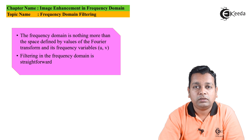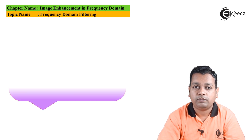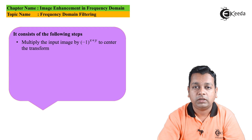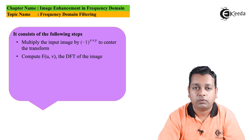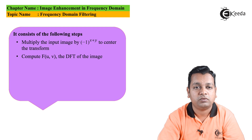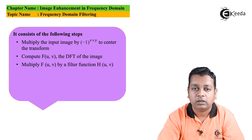The filtering in the frequency domain is very straightforward. The steps we can list out here consist of: first, multiplication of the input image by (-1)^(x+y) to center the transform; next, computation of F(u,v), the DFT of the image — that is, the Discrete Fourier Transform. The direct transformation switches us from the spatial domain to the frequency domain. Then we have the next step: multiplication of F(u,v) by a filter function H(u,v).